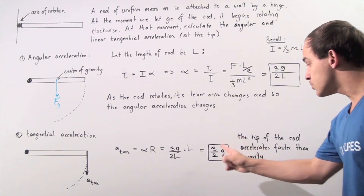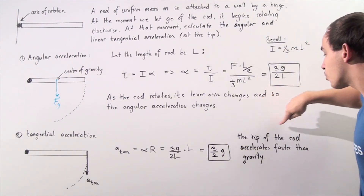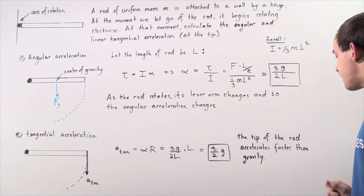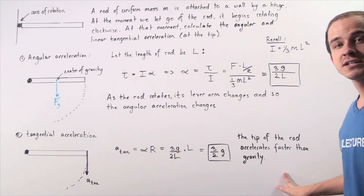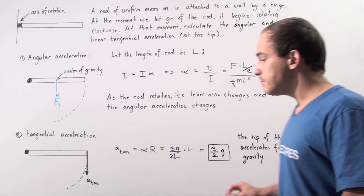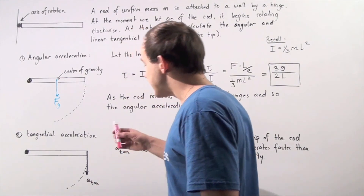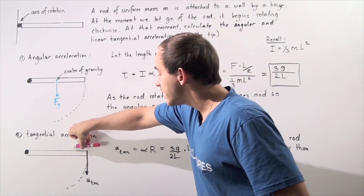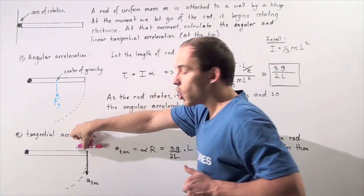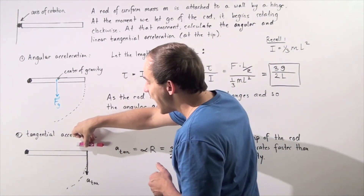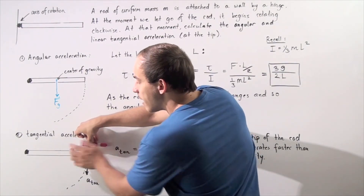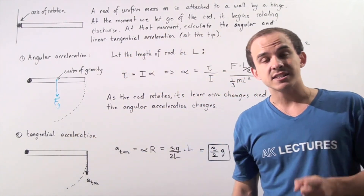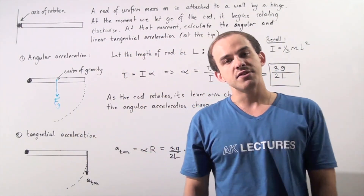Notice a very interesting point: the tip of the rod accelerates faster — 1.5 times faster — than the gravitational acceleration. What that means is, if I take an object, like this marker, and place it on top of my rod, then let go of the rod and the marker at the same exact time, the marker will be left at the top, because the rod will accelerate 1.5 times faster than the object resting on the tip.